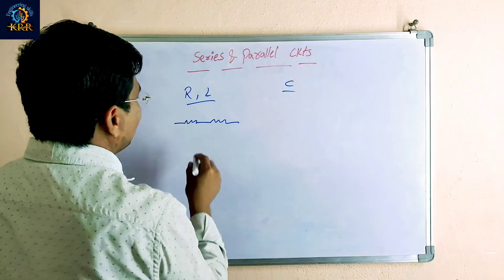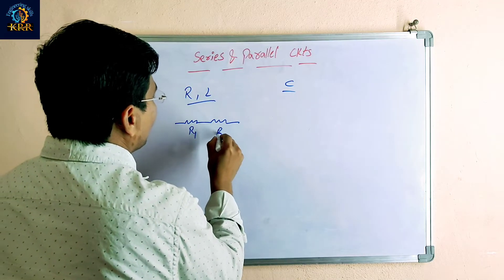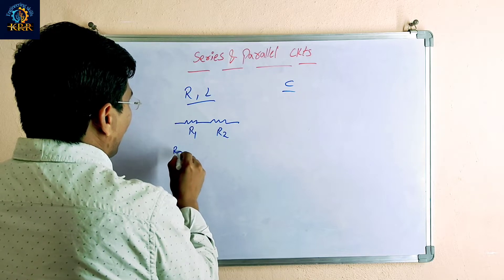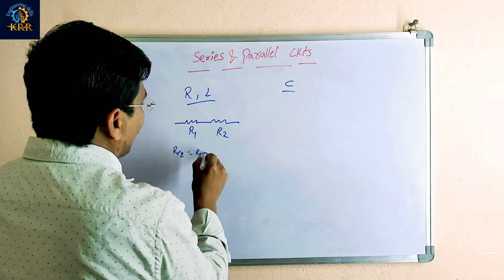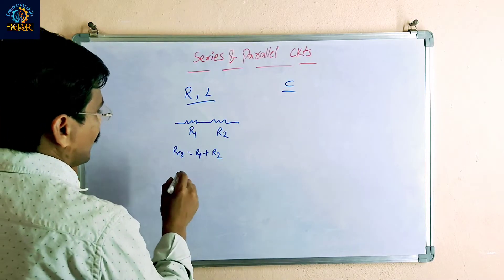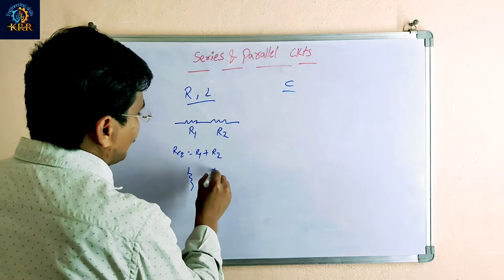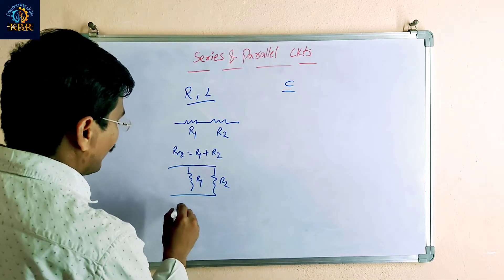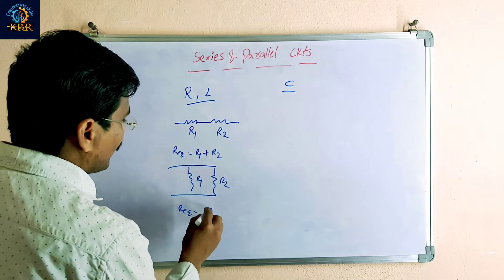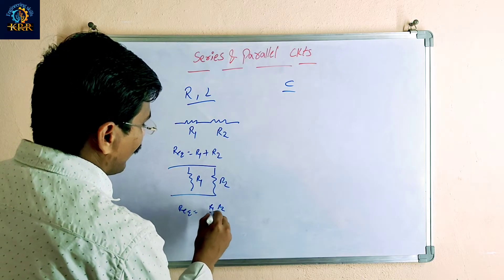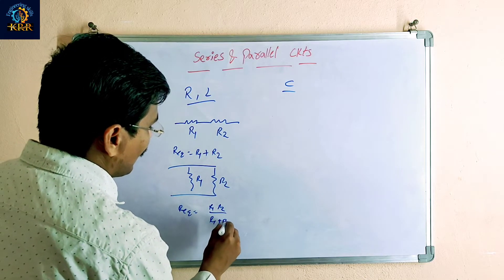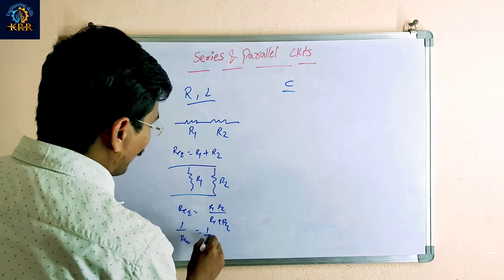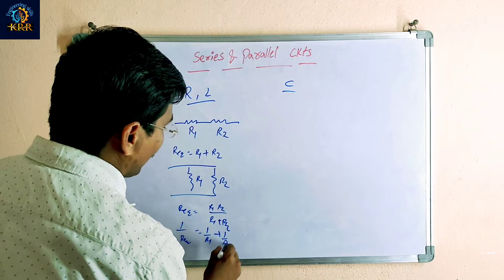For two resistors in series, R equivalent is equal to R1 plus R2. For two resistors in parallel, R equivalent is equal to R1 times R2 divided by R1 plus R2.